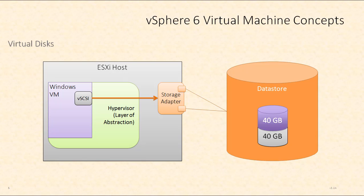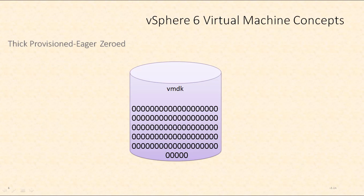A thick provisioned disk is different. When you create a thick provisioned disk, all of that space is immediately consumed as soon as it's allocated. A thick provisioned disk allocates 100% of the space up front, and before that space can be used, all the blocks must have zeros written to them.